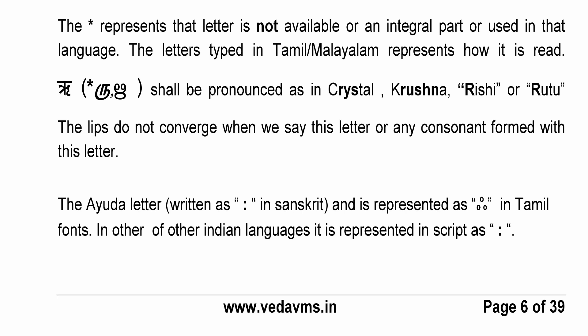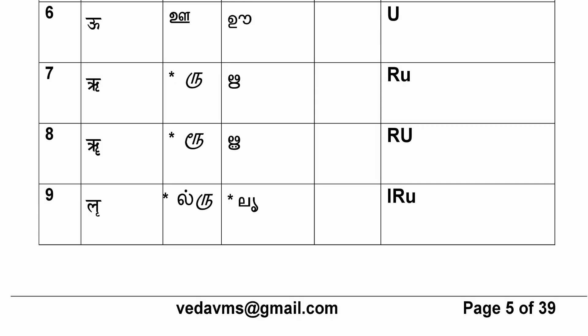The short letter 'ṛ' is hraswa. The long letter 'ṝ' — heard in words like 'pitṝn' — is the dirgha, pronounced at twice the time scale of the short letter.